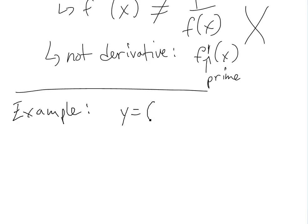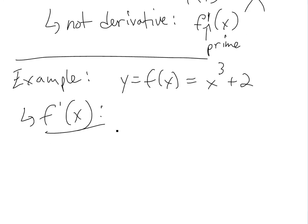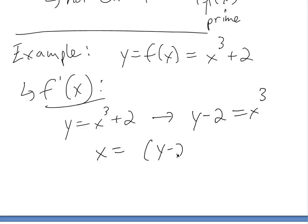Let's say we have y equals a function of x, and that function is x cubed plus 2. If we want the inverse, this is how we would solve it. We have y equals x cubed plus 2. You could just solve for x: y minus 2 equals x cubed, and then x equals the cube root of (y minus 2), or (y minus 2) to the power of 1 over 3.